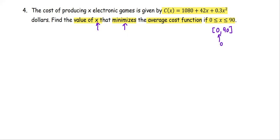We are looking for the x that minimizes the average cost function on the closed interval [0, 90]. Therefore, a = 0 and b = 90. The function we're going to work with is the average cost function, not the cost function provided directly from the problem.